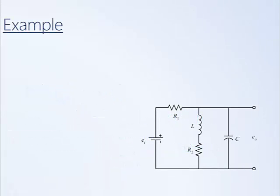Here's an example of a more complicated circuit with two loops. We're going to derive the governing equations for this circuit.